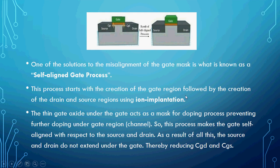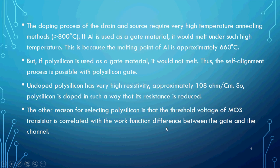The self-aligned gate process starts with creation of the gate region, followed by manufacturing the source and drain terminals using ion implantation. The thin gate oxide under the gate acts as a mask for the doping process, preventing further doping under the gate region — which means under the channel. This makes the gate self-aligned with respect to source and drain, so the source and drain do not extend under the gate area, reducing CGD and CGS.